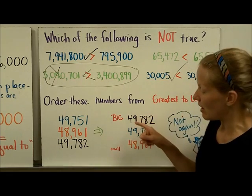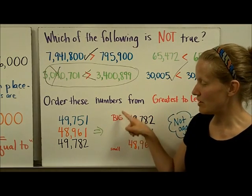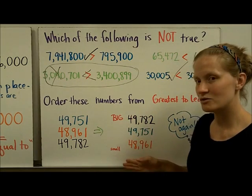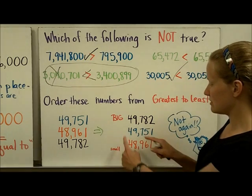So when I started to do this problem, I made myself, when I saw greatest to least, I made myself write a big to small so that when I started to order them, I double-checked that they were going in that order.